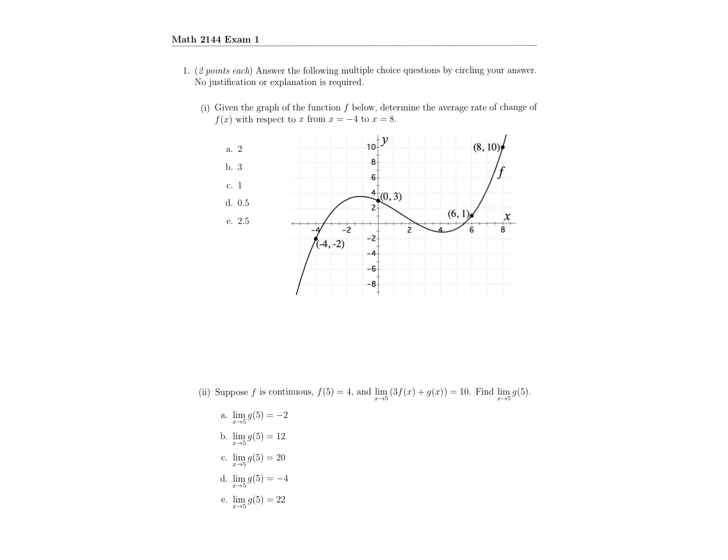Hello and welcome to the Spring 2022 Calc 1 exam review. We're just going to jump right into it. For question 1, part 1, we are given this graph of f below, and they want us to find the average rate of change with respect to x from x equals negative 4 to x equals 8.